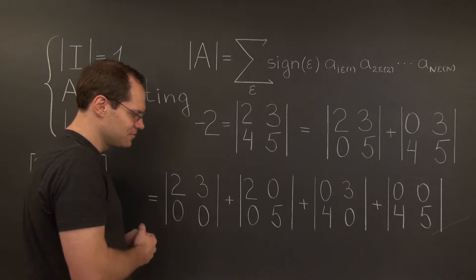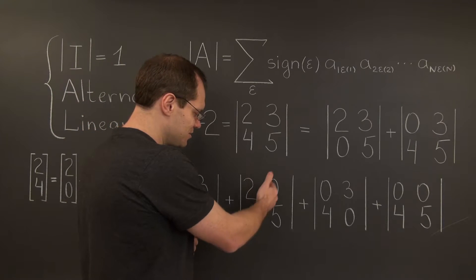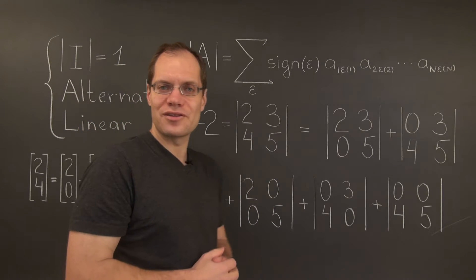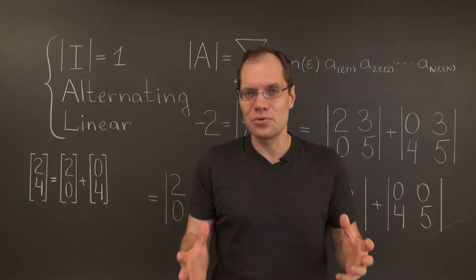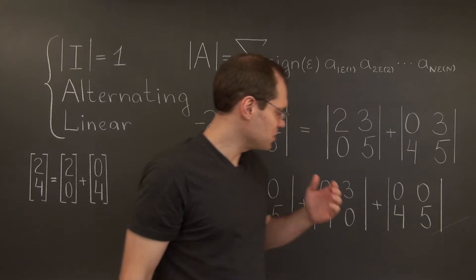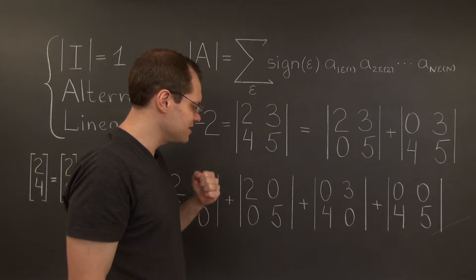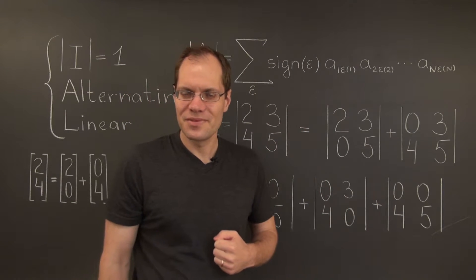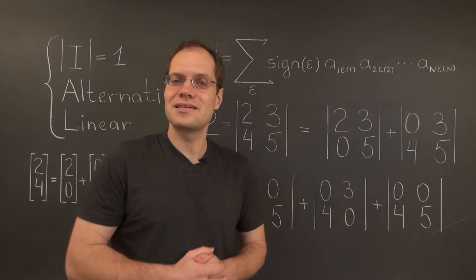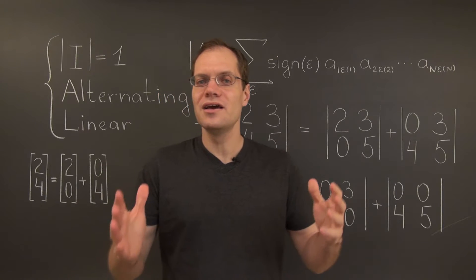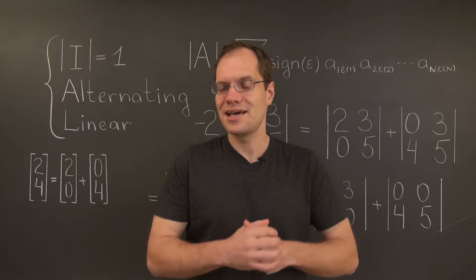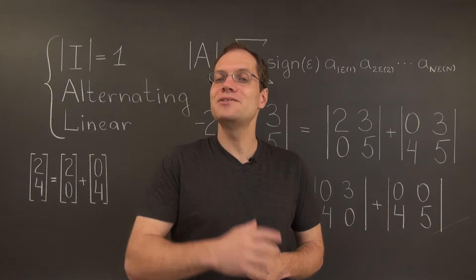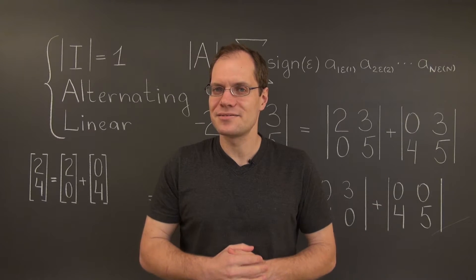This leaves us with columns of the form (1, 0), (1, 0), (1, 0), (0, 1), and so forth. In other words, when we factor out these non-zero entries, the matrix will have columns that consist only of ones and zeros.